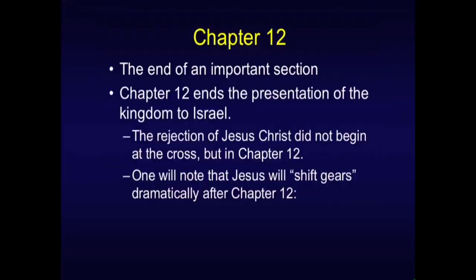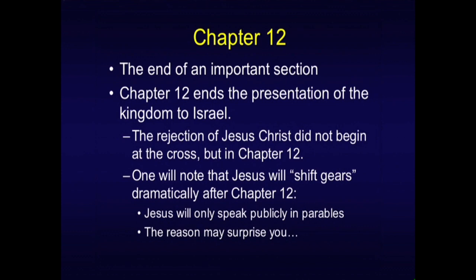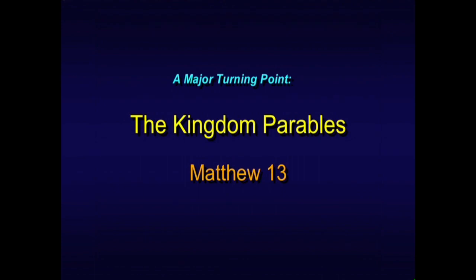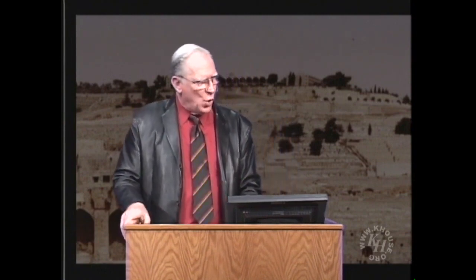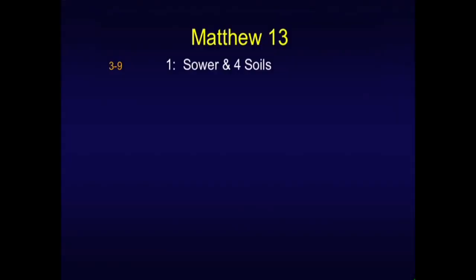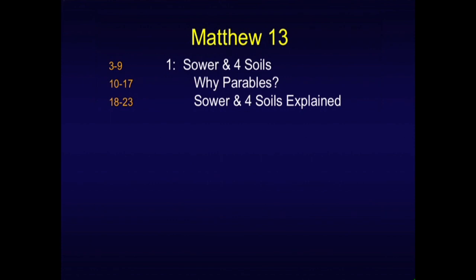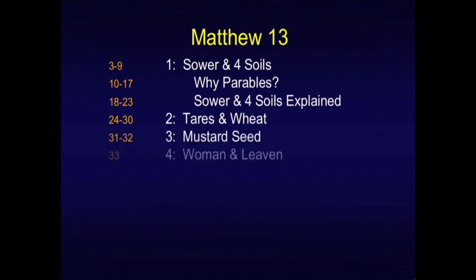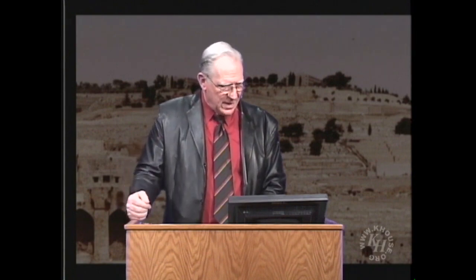From this point on, Jesus will shift gears very dramatically. He will only speak publicly in parables, for some very surprising reasons. We're at this turning point — the kingdom parables as they're often called in Matthew 13. The first few verses deal with the sower and four soils. Then Jesus talks about why he speaks in parables, counseling his disciples on that matter. Then he explains the first parable. He also gives them the tares and the wheat, then the mustard seed and the woman and leaven. The first four parables are given in public; the explanations are given to the disciples in private.